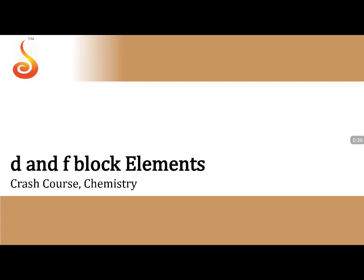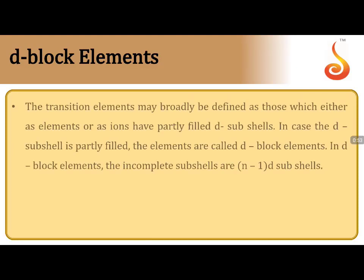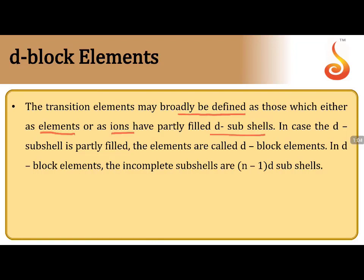Let us start our journey with the D block and F block elements. D block elements are those elements in which the differentiating electron enters into the penultimate shell orbitals. They are also called transition elements, which may be broadly defined as those elements or ions that have partially filled D sub-shells.